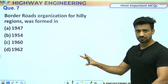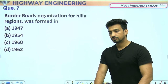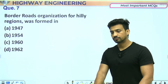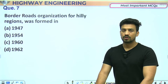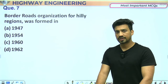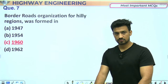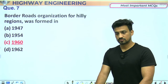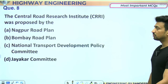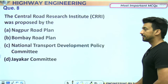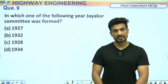CPWD 1854 में formed हुआ। Border Road Organization (BRO) 1960 में formed हुआ। Central Road Research Institute (CRRI) को Jekar Committee ने propose किया था।